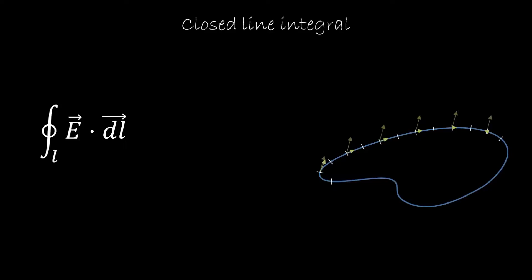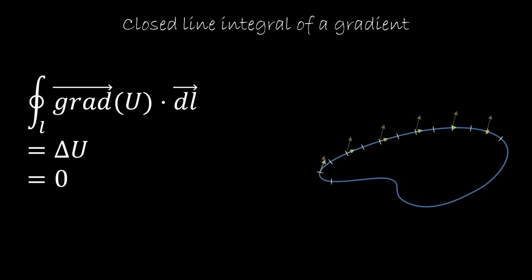As we did with the line integrals and the gradient, we now ask ourselves what is the closed line integral of the gradient. As we saw before, the line integral of the gradient is just the difference between the value at the beginning of the line and the end of the line. But since the line is closed, the beginning is also the end, so the initial value is also the final value, and the difference between them is zero. So the line integral of a gradient is always going to be zero, no matter the line and no matter the scalar field. This is a general property.